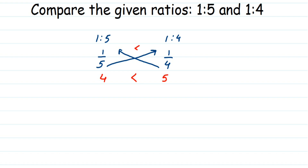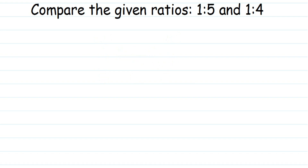Now I'm going to show you the second method, which has a few more steps. It is similar to comparing fractions. We have 1 is to 5 and 1 is to 4, which equal 1/5 and 1/4 respectively.